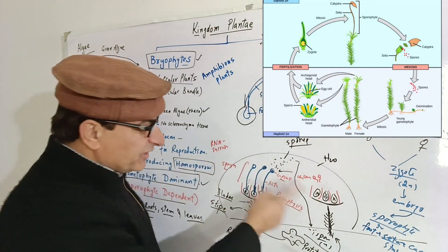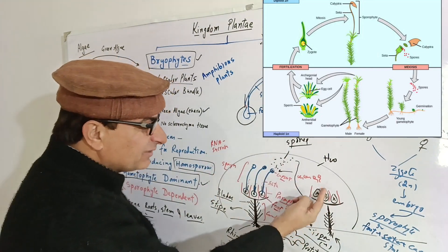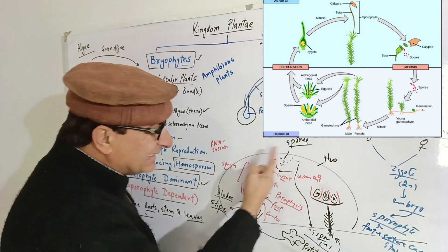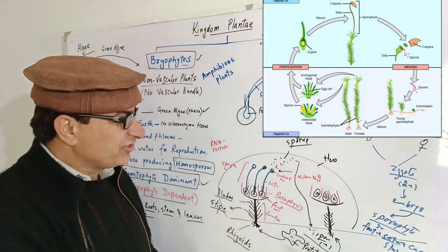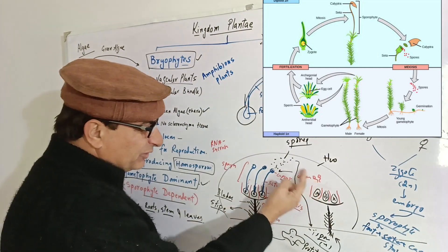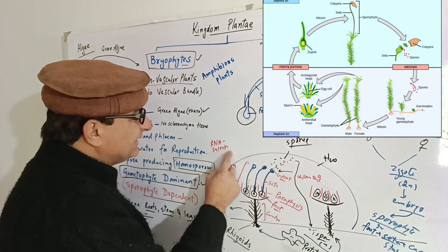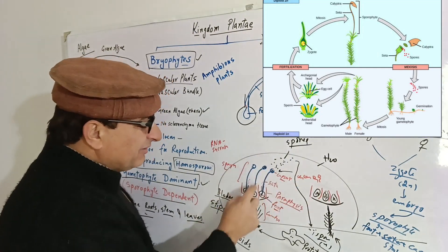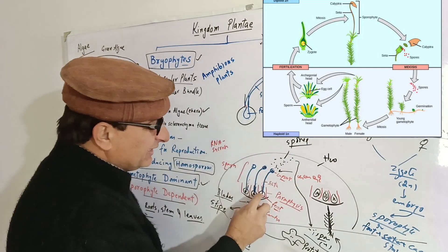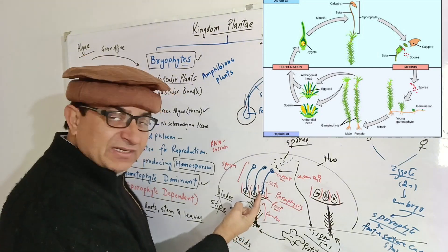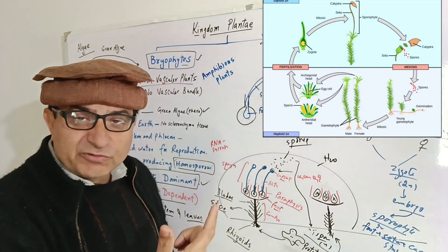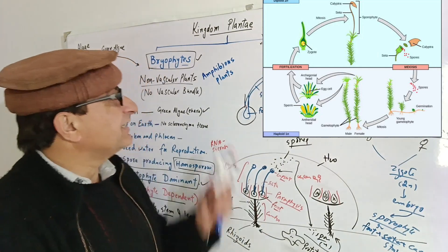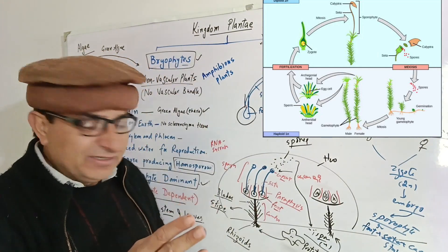Bryophytes need water for fertilization. A thin film of water is good enough for the movement of the sperm from antheridia to archegonia. If there is no water, sperms cannot move from antheridia to archegonia — that is why bryophytes are called amphibious plants. Sperms chemotactically move towards archegonia using sucrose or RNA as a stimulus. Fertilization results in formation of a zygote, which remains inside the archegonia. The zygote will develop into a multicellular embryo — and embryo is also a characteristic of embryophytes, which is absent in algae.